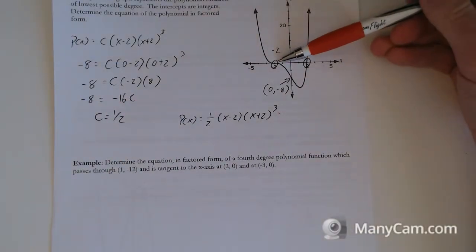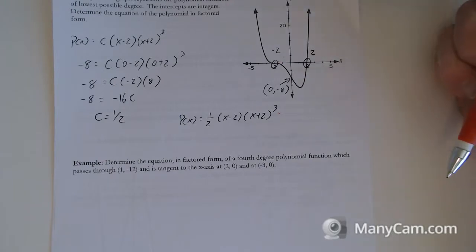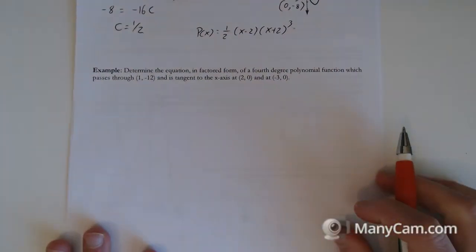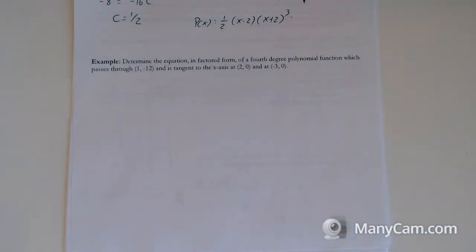P of x is equal to 1 half times x minus 2 times x plus 2 cubed. Nice and straightforward. The only hard part is recognizing that this is a third degree one. I think if you're comfortable with that, this should be pretty easy. More of the same, just different ways of asking those questions.